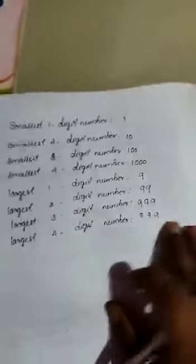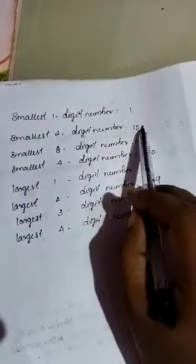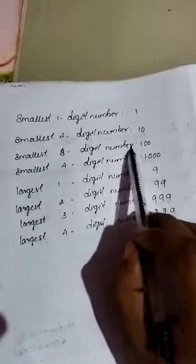First we study the smallest one digit number is 1, smallest two digit number is 10, smallest three digit number is 100.